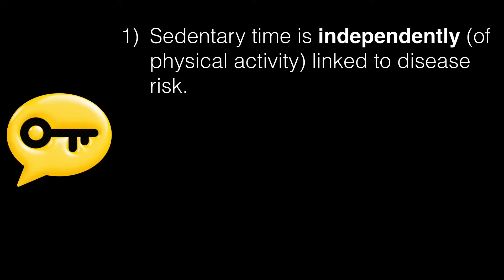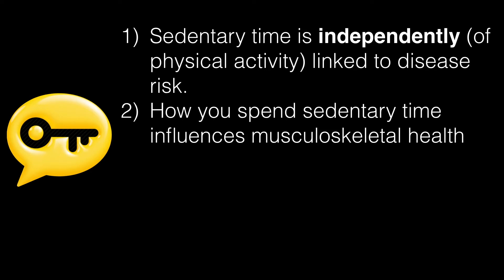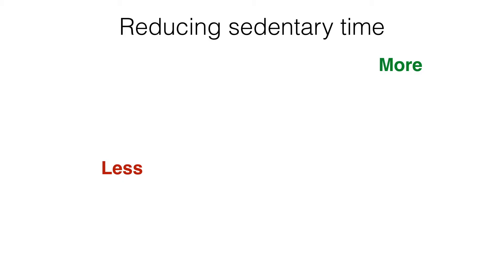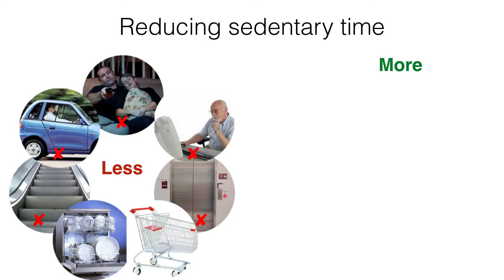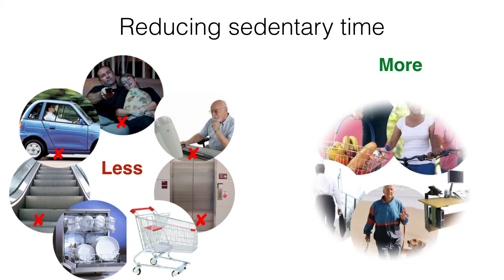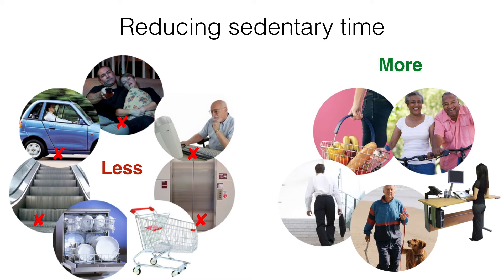Key messages: sedentary time is independently linked to disease risk. How you spend that sedentary time influences musculoskeletal health. Ways to reduce sedentary time include doing less sitting and using fewer conveniences. For example, a friend who is also an exercise physiologist will take two baskets at the supermarket instead of a trolley, just to get in some extra incidental physical activity.